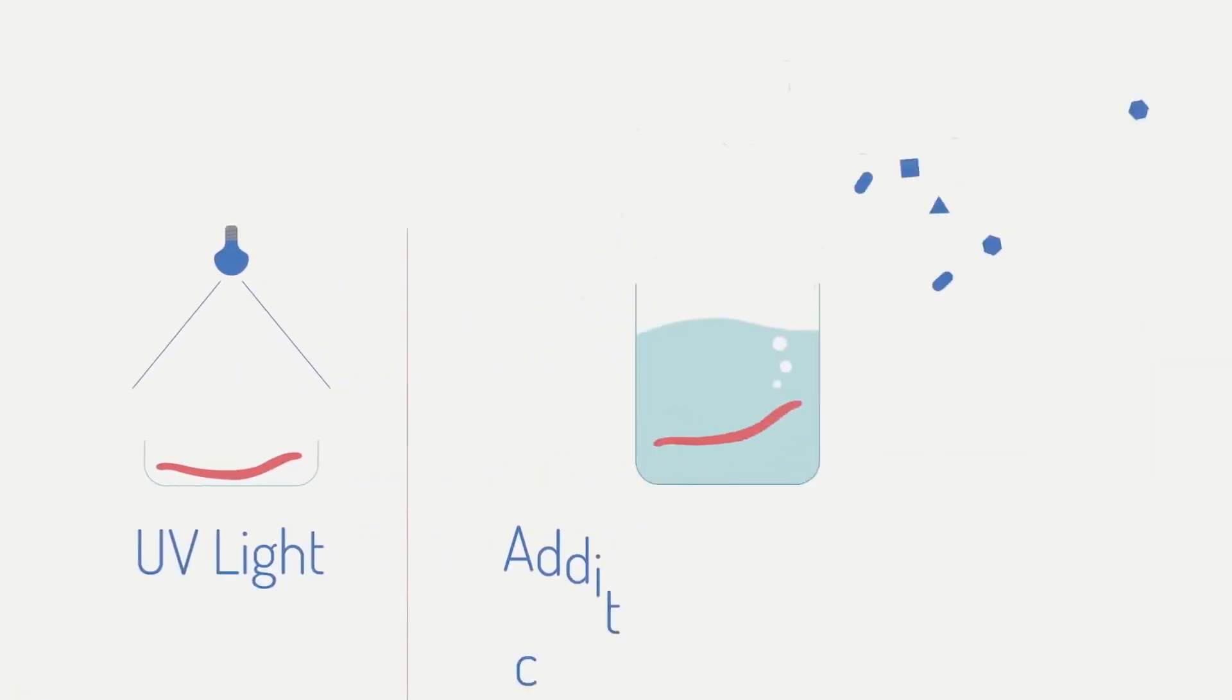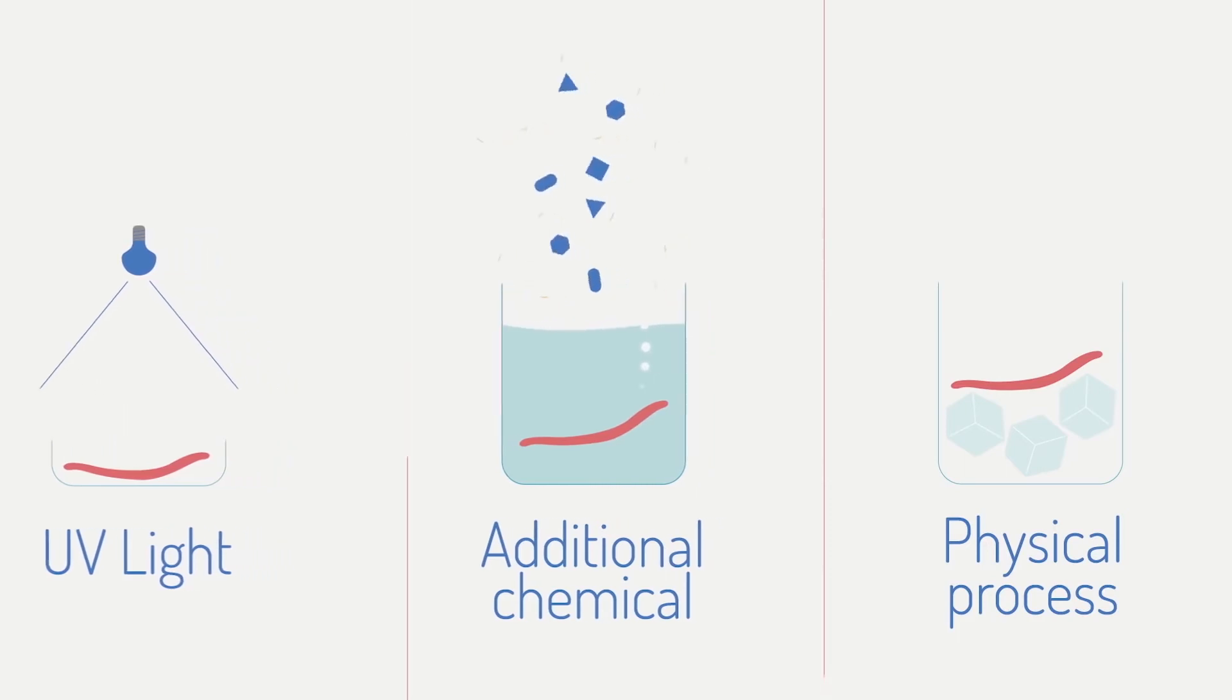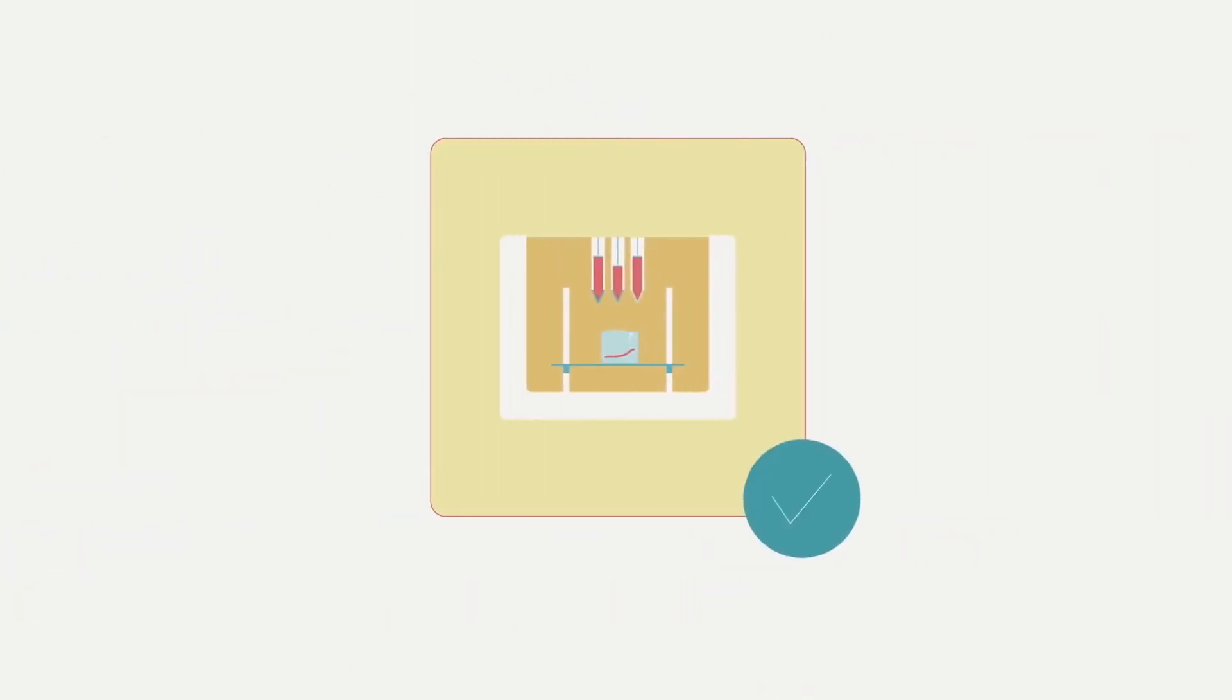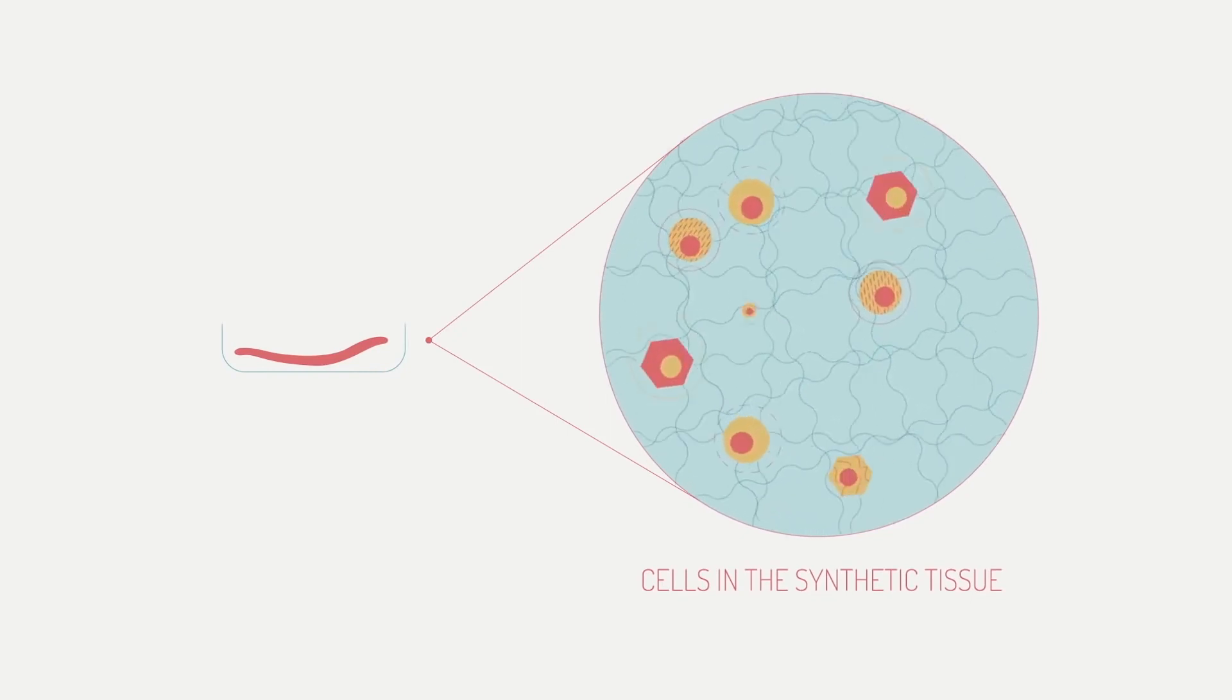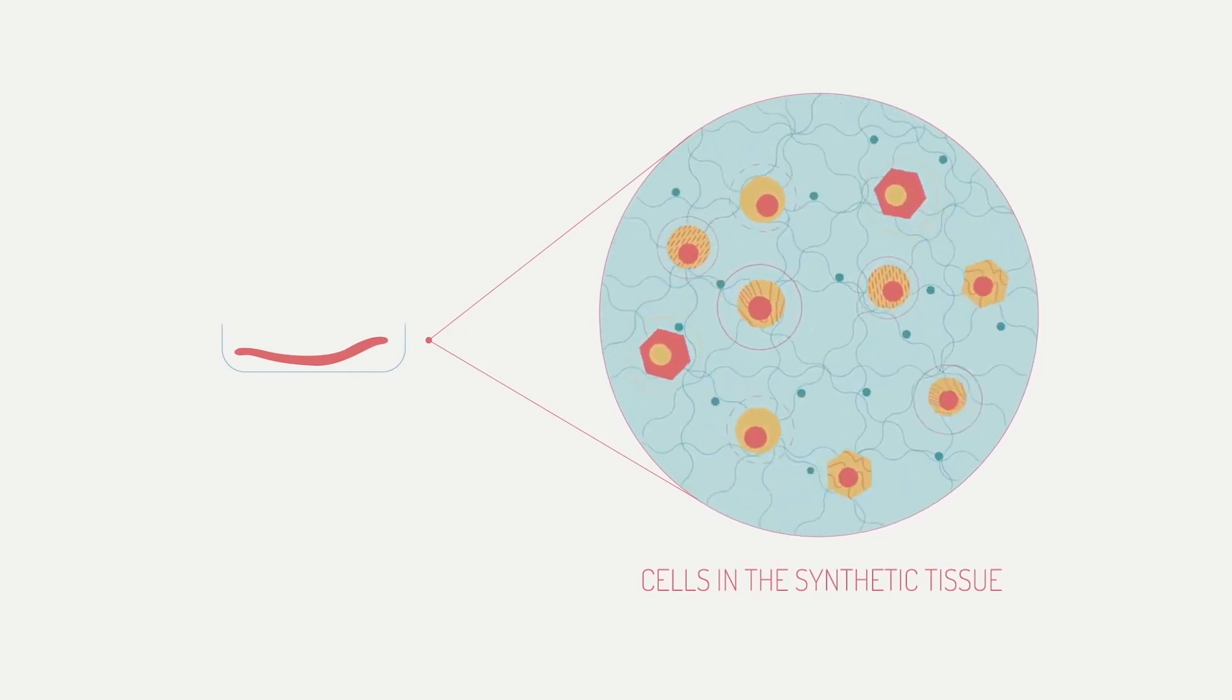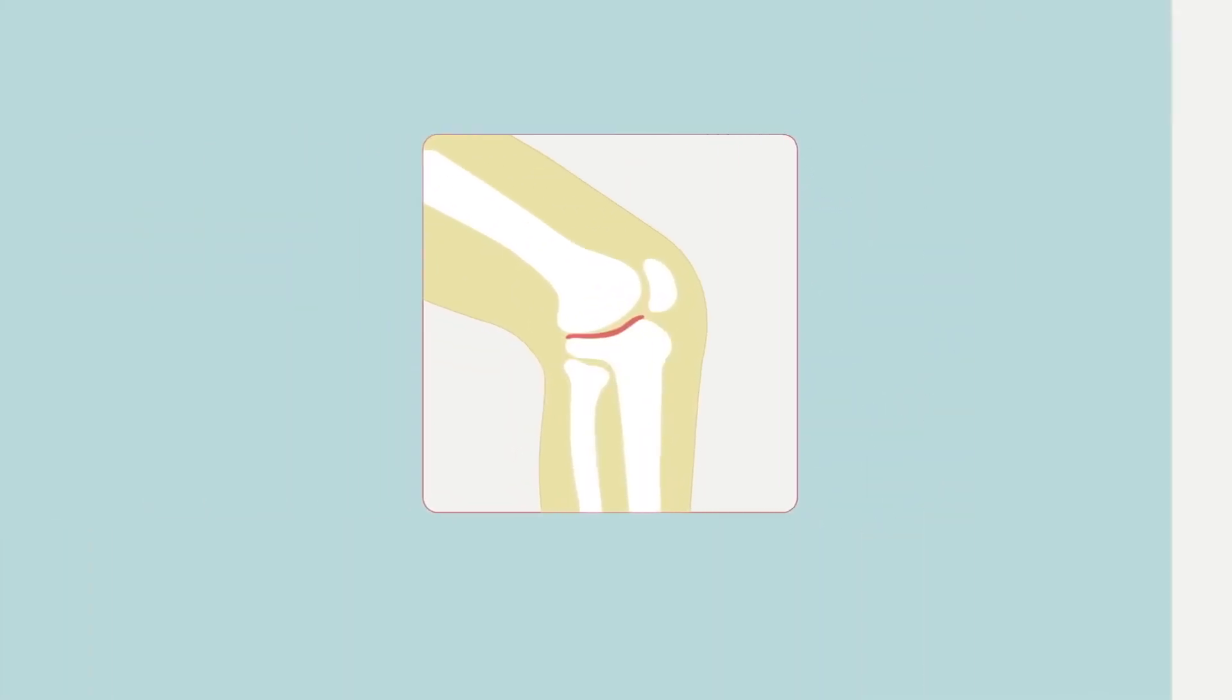After printing, some bio-inks will stiffen immediately. Others need UV light or an additional chemical or physical process to stabilize the structure. If the printing process is successful, the cells in the synthetic tissue will begin to behave the same way cells do in real tissue, signaling to each other, exchanging nutrients, and multiplying.